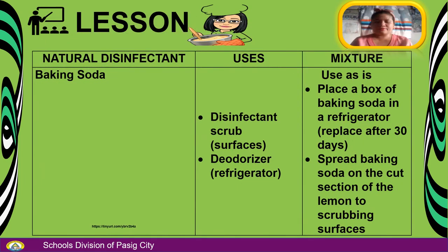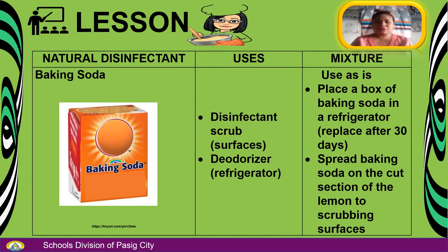Next we have baking soda, used as a disinfectant scrub for surfaces and as a deodorizer for the refrigerator. For the mixture, it can be used as is. You can place a box of baking soda in a refrigerator and replace it after 30 days, or spread baking soda on the cut section of a lemon for scrubbing surfaces.